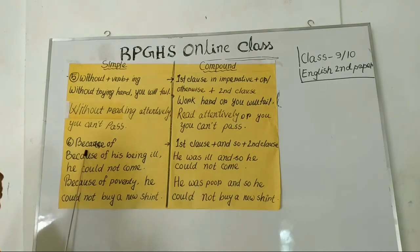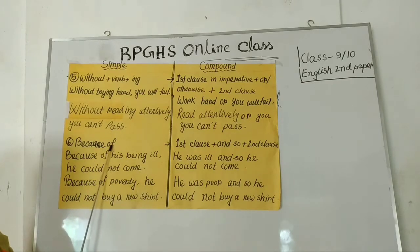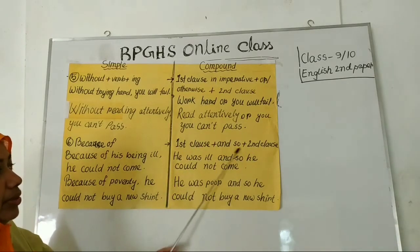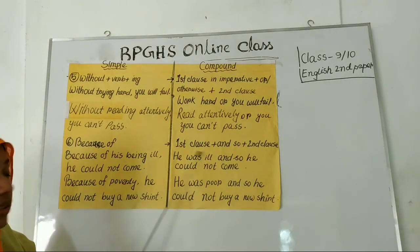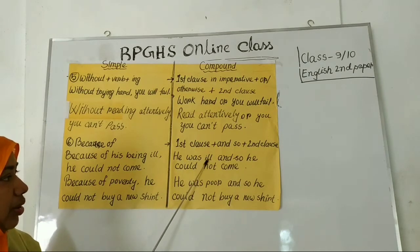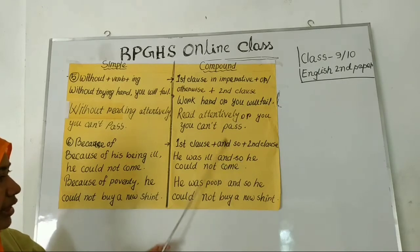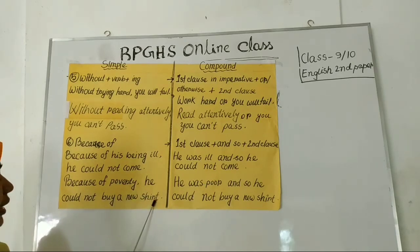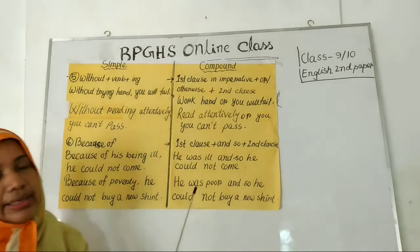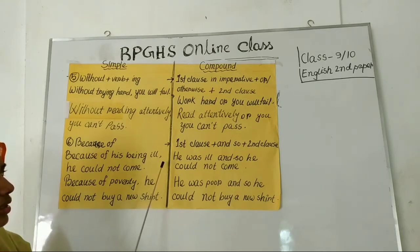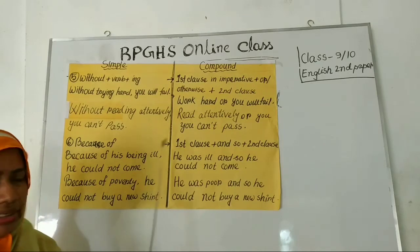Now, rule number six: because of. If you get because of in a simple sentence, you have to take the first clause and second clause combined with the coordinating conjunction and so. Example: 'Because of his being ill, he could not come.' The phrase becomes the clause 'He was ill,' then and so, then 'he could not come.' Another example: 'Because of poverty, he could not buy a new shirt.' becomes 'He was poor and so he could not buy a shirt.' You must turn the phrase of the simple sentence into a clause when making it compound.